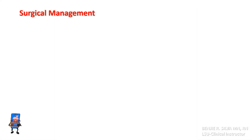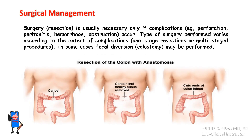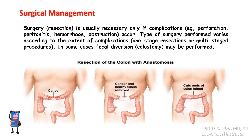Surgical management: Surgery such as resection is usually necessary only if complications occur, for example perforation, peritonitis, hemorrhage, or obstruction. The type of surgery performed varies according to the extent of complications; either one-stage resections or multi-stage procedures may be performed. In some cases, fecal diversion like colostomy may be performed.